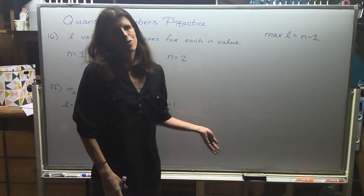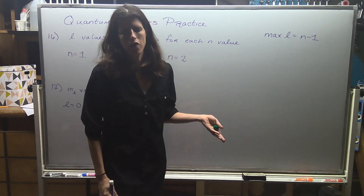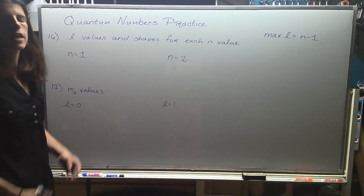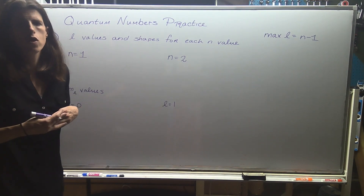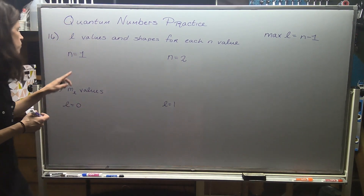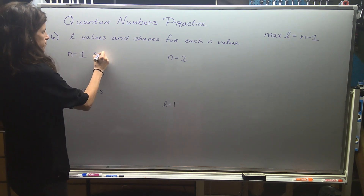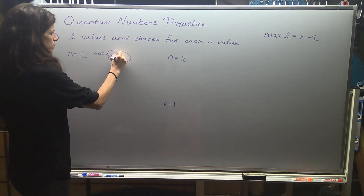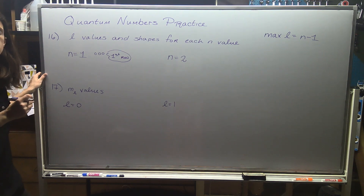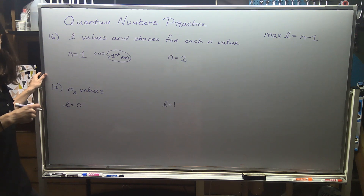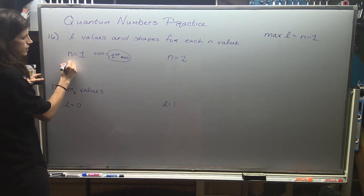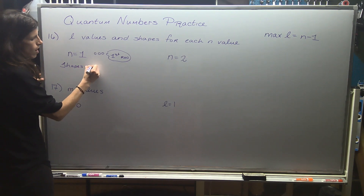Students don't really like this formula that much, but I liked it when I was a student. It's a lot more intuitive to just look at the periodic table and think about your electron configurations. In the first row of the periodic table, which is n equals one, we just have hydrogen and helium. If you write an electron configuration for either one, it's 1s1 or 1s2, so the only shapes we see in that first row are s orbitals.